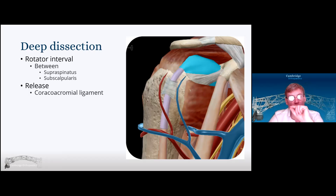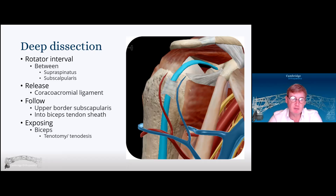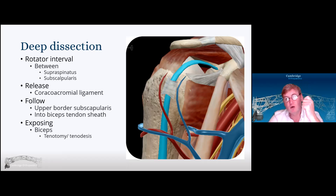Often releasing the coracoacromial ligament gives you a lot more access to feel that rotator interval if you're struggling. When you get down to this level, you've got a couple of options. You can leave biceps where it is, but then you don't want to destabilize it. If you do come into the biceps groove and release the transverse ligament, then you need to do something with biceps — either a simple tenotomy or tenotomy and tenodesis. I'll often tenodese it to the soft tissues around subscapularis and into the greater tuberosity.